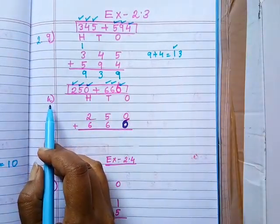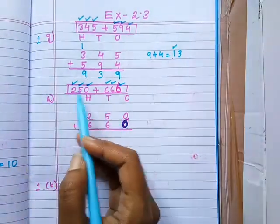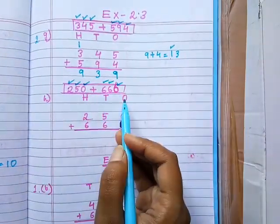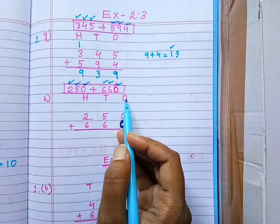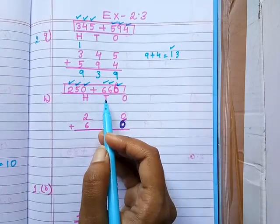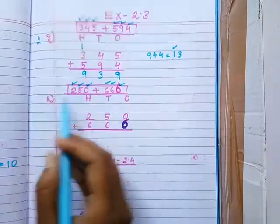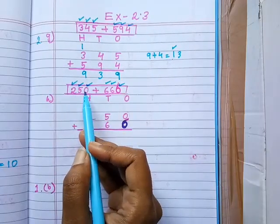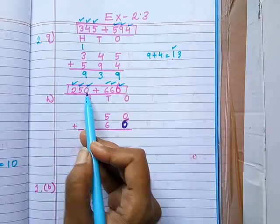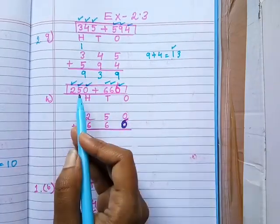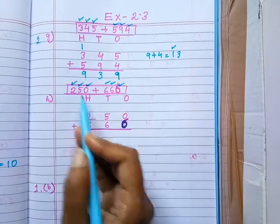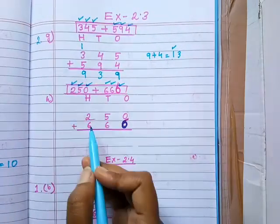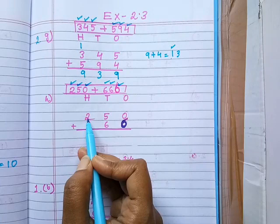Question number 8: 250 plus 666. First write down the place value chart — 1's place, 10's place, 100's place. Next write down the number in the place value chart. The 1's place digit is 0, write down 0. The 10's place digit is 5, write down 5 in 10's place. The 100's place digit is 2, write down 2 in 100's place.